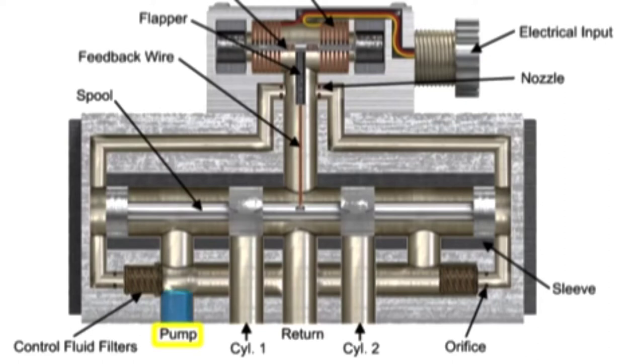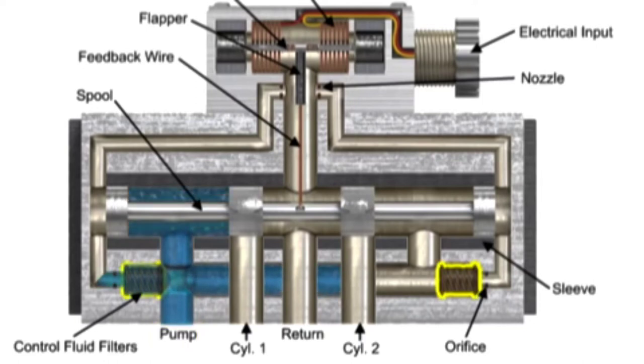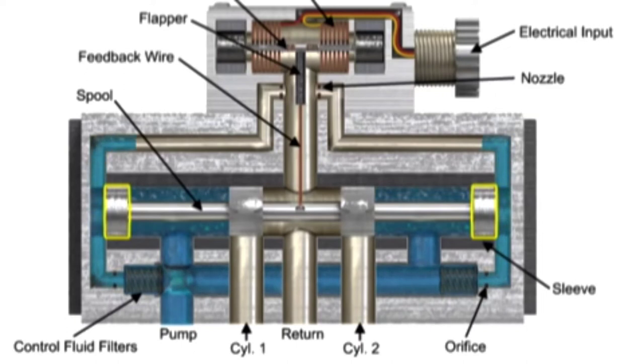Fluid from the pump inlet is tapped off through filter elements, passes through orifices past both ends of the spool, goes on to nozzles, and out to the return line.